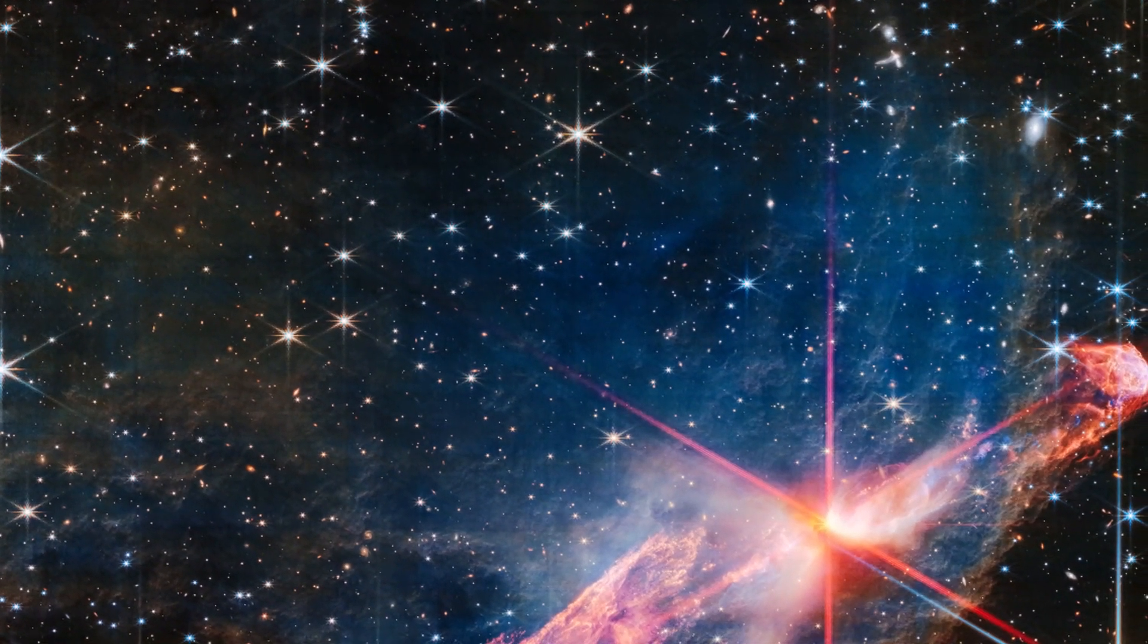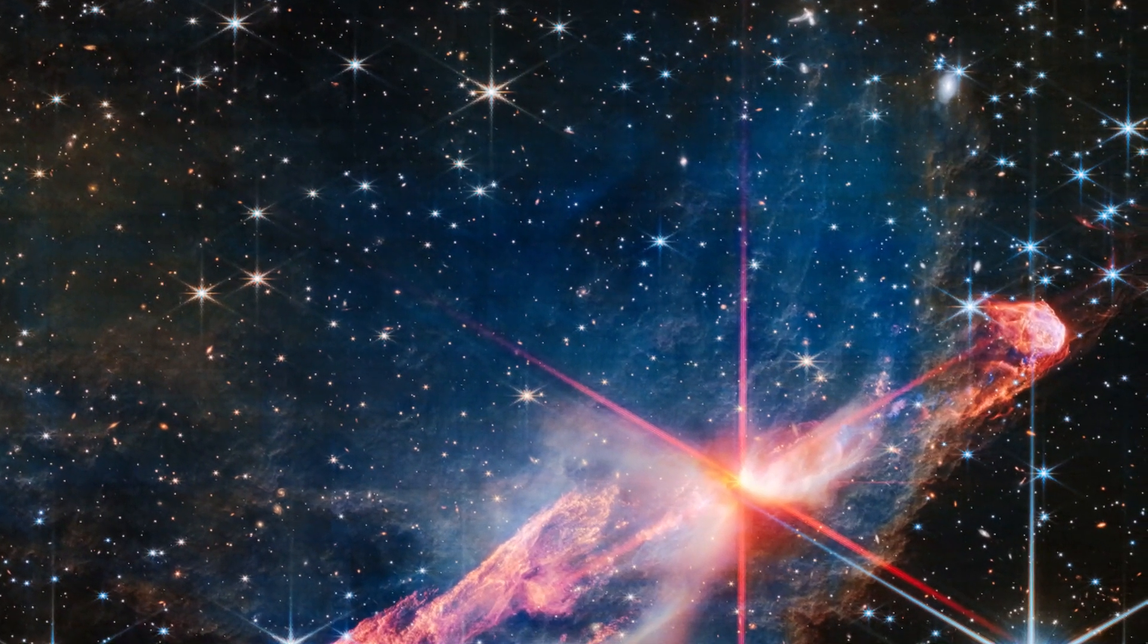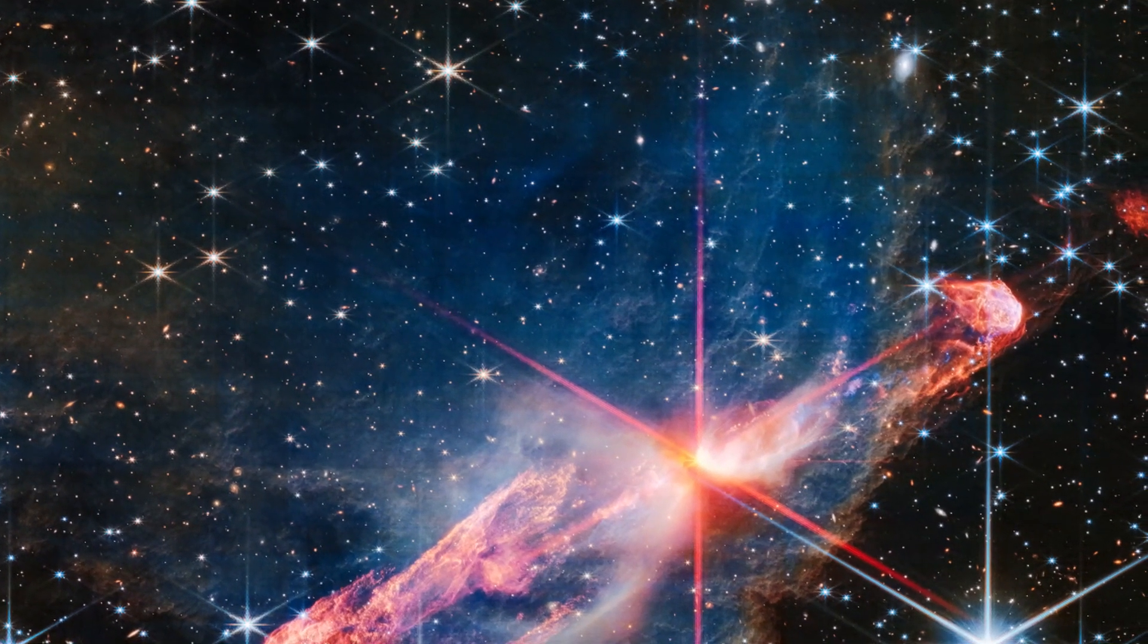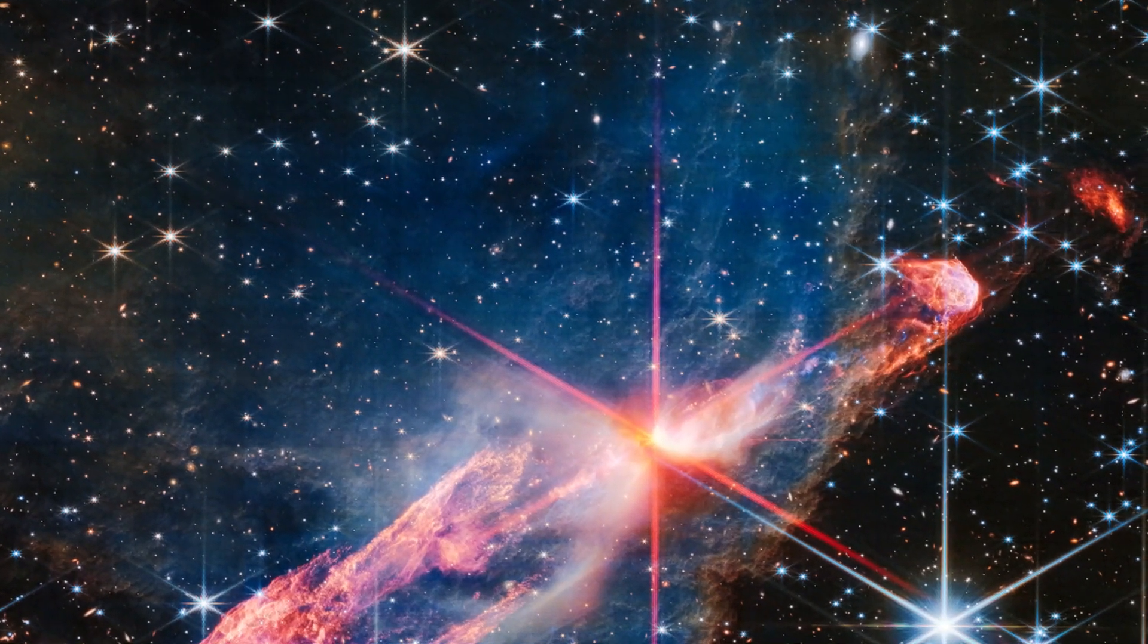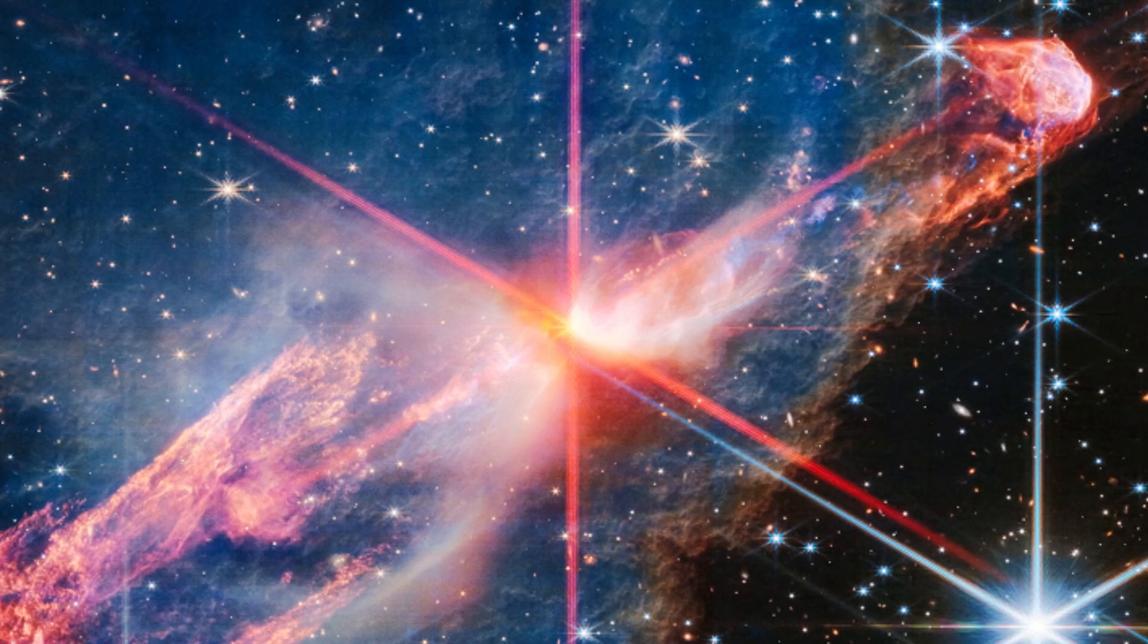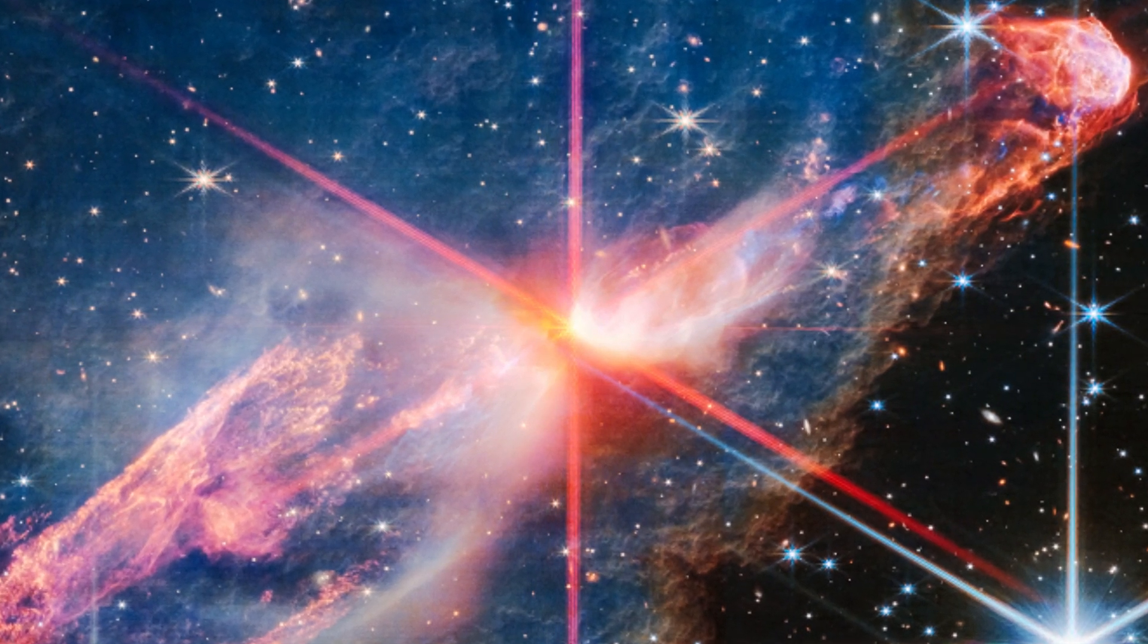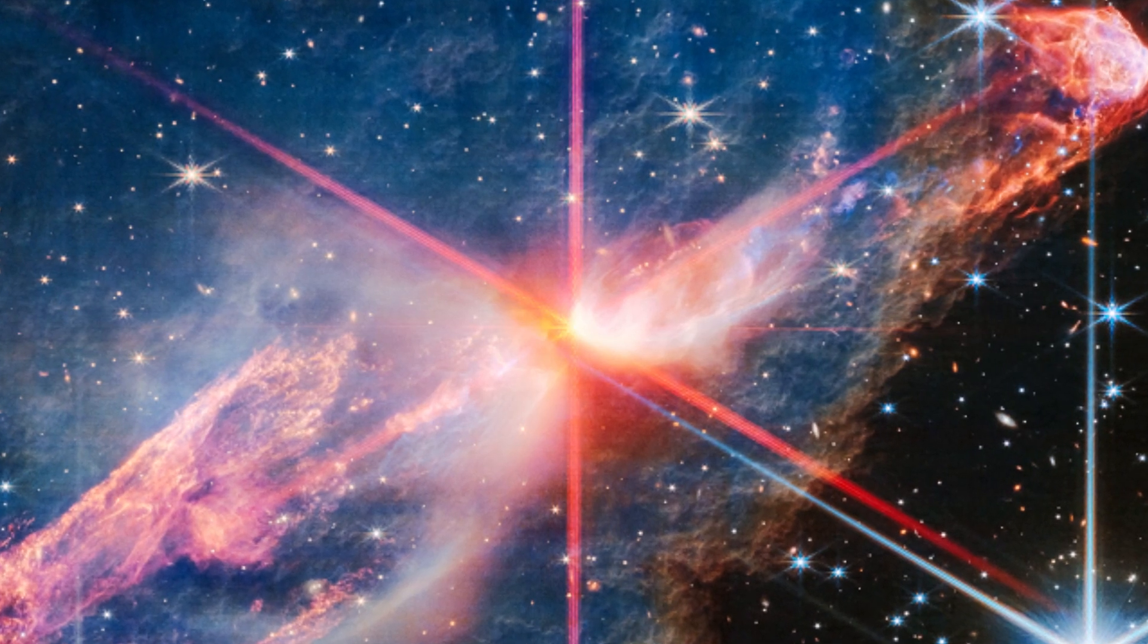Stars take millions of years to fully form, so studying targets like this can help researchers learn more about how stars gather mass over time and how our own sun formed. The stars are buried deep in the center of the red diffraction spikes, appearing as an orange-white splotch. They are surrounded by a disk of gas and dust that continues to add to their mass.